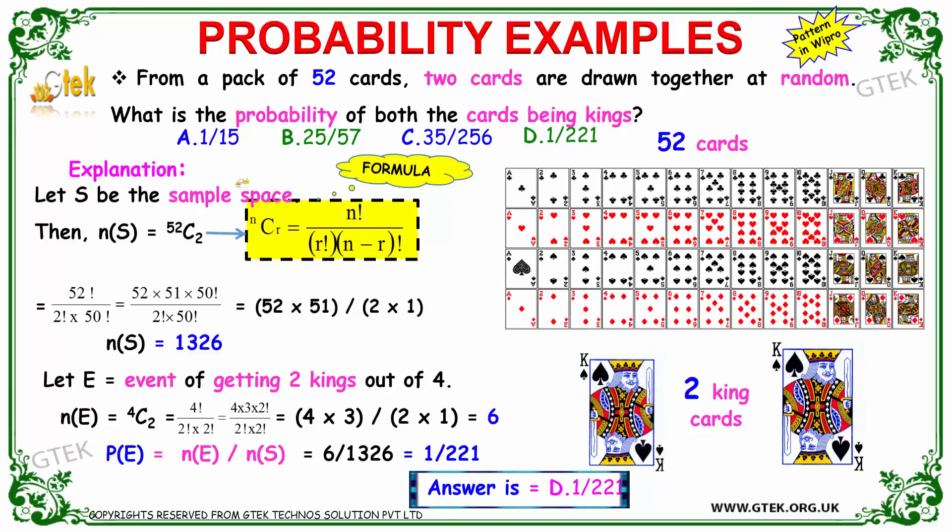We got our sample space as 52C2, so n factorial divided by r factorial n minus r factorial. That's 52 into 51 into 50 factorial divided by 2 into 50 factorial. So this one will be tallied, and you got 52 into 51 divided by 2. That's 1326.